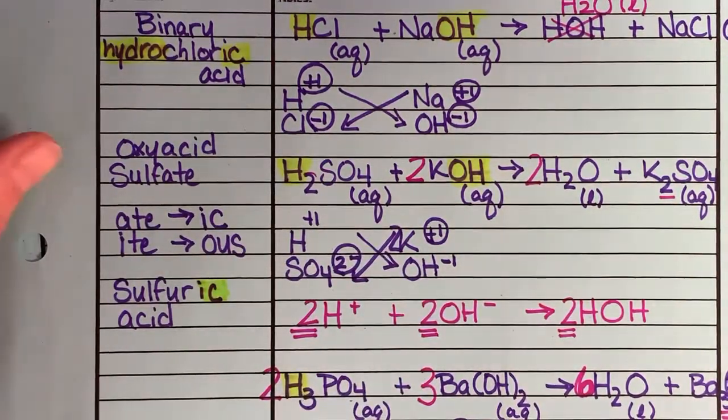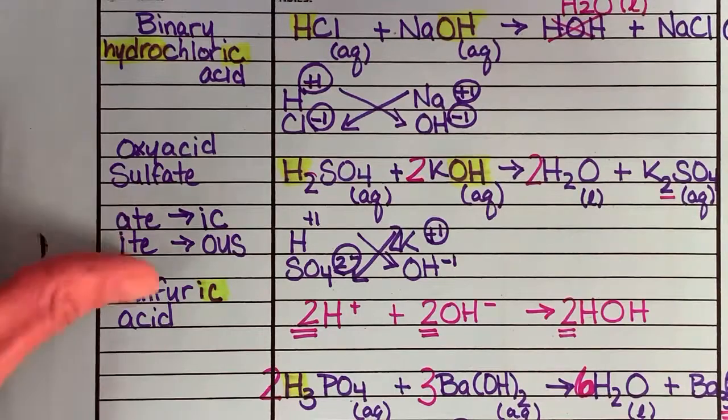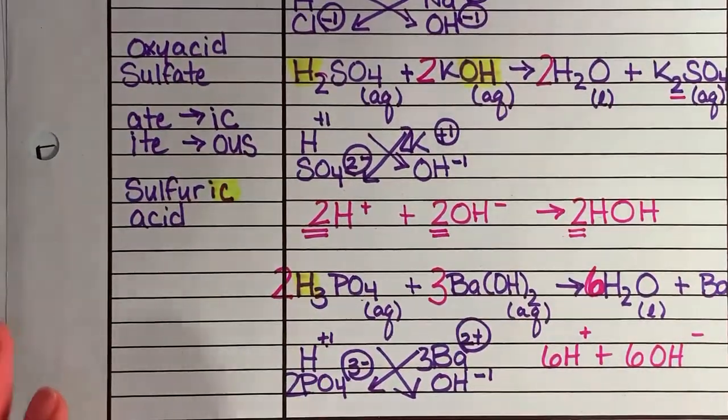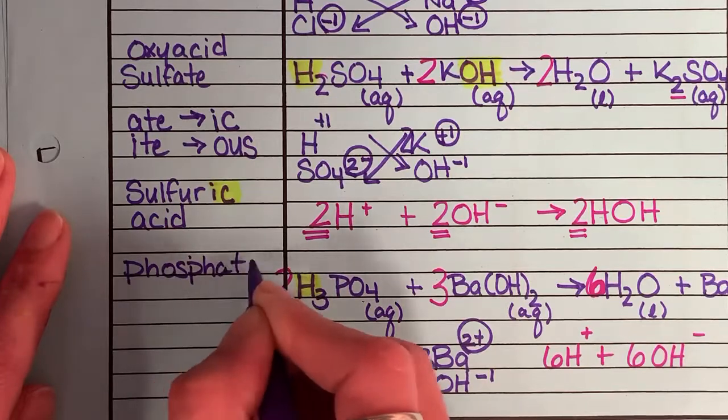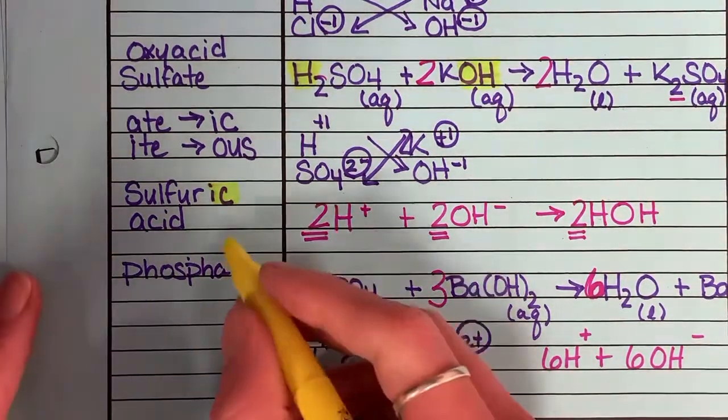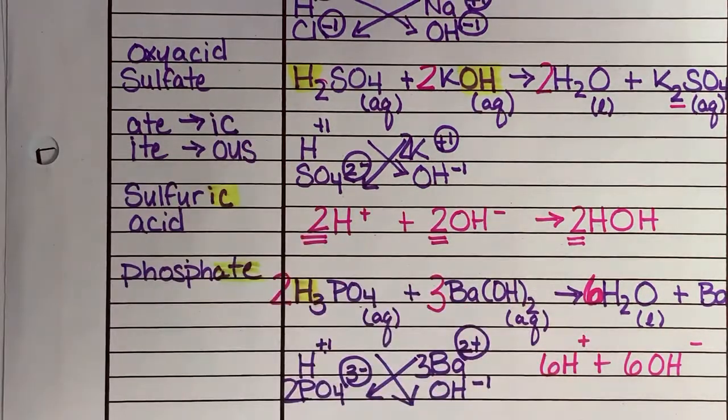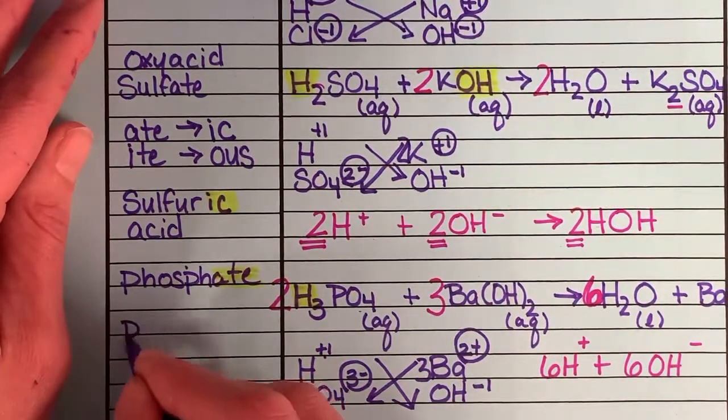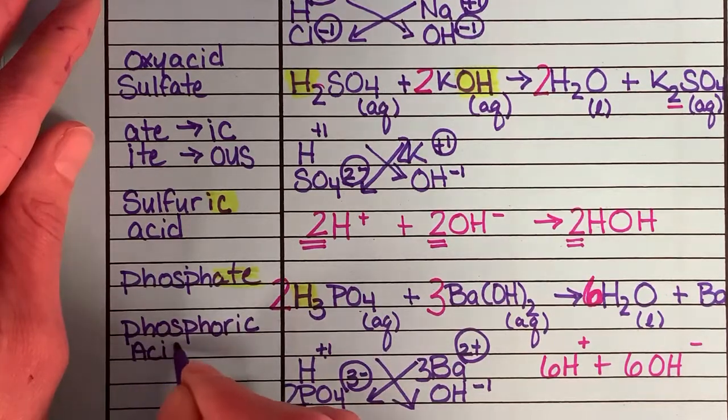If it was sulfite, he would become sulfurous acid. O-U-S. Same thing down here with phosphate. Phosphate, A-T-E. We change that ending to IC. Now normally we would expect him to be phosphic acid. Just like with sulfate, he becomes phosphoric. Phosphoric acid.